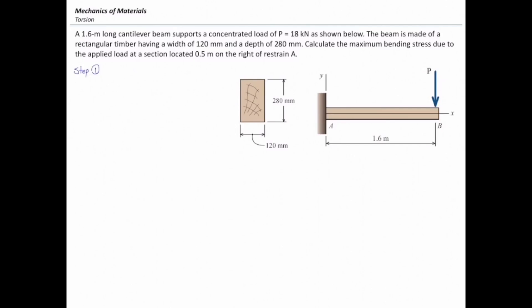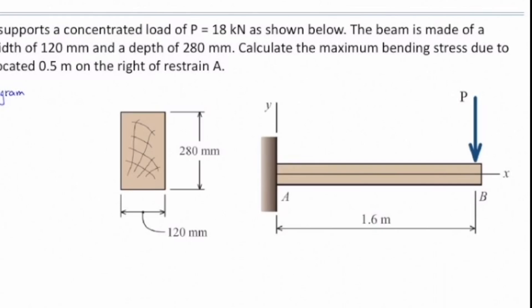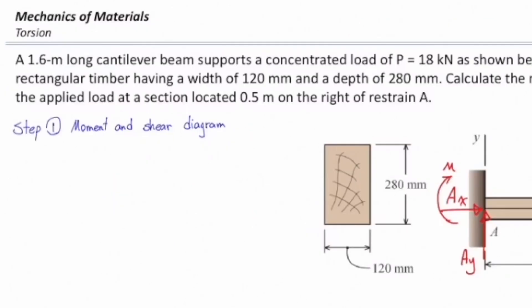As always, the first step would be using a free body diagram to determine the maximum bending moment in this problem. There are three reaction forces at A: Ay, Ax, and M. Using sum of the forces in x, y direction and sum of the moments gives me Ax equal to 0, Ay equal to P, and moment equal to negative PL.